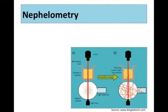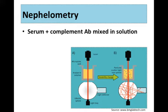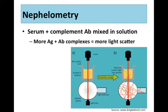Nephelometry is very similar to spectrophotometry, except it measures light scattering rather than transmittance and absorbance. You mix the patient's serum — which contains the complement proteins — with an antibody specific for the protein you want to analyze in a solution. You put that solution into the nephelometer, and it measures how light scatters in proportion to how many antigen-antibody complexes are formed. The more complement in the serum, the more complexes form, and the more the light scatters.